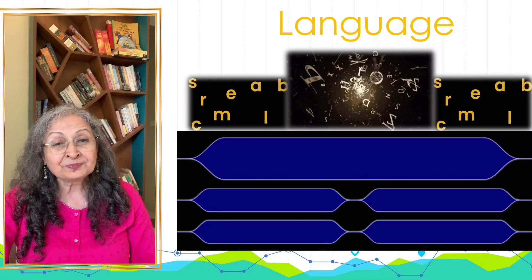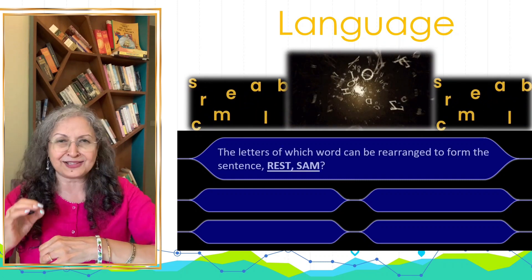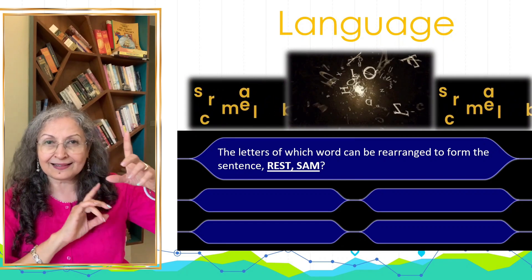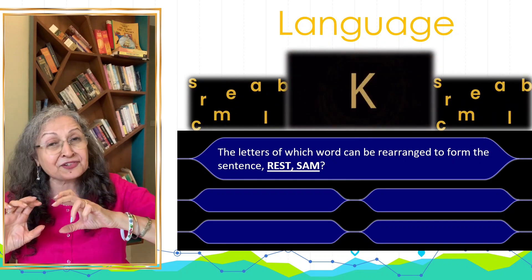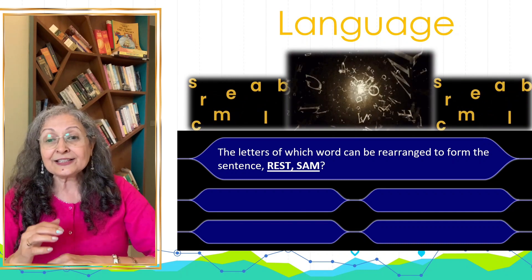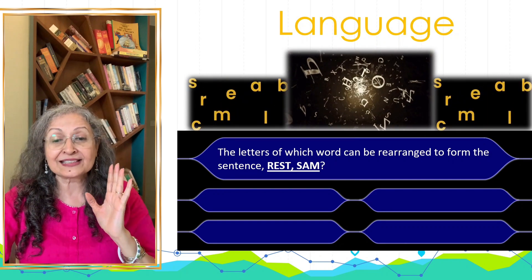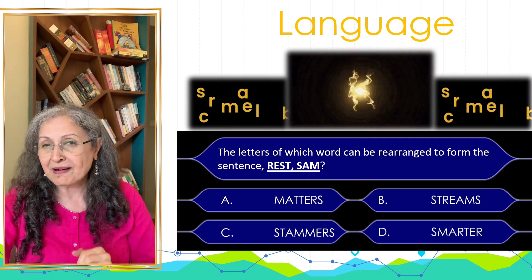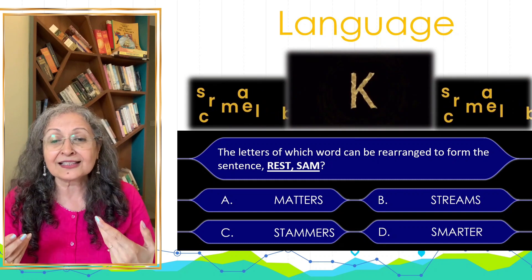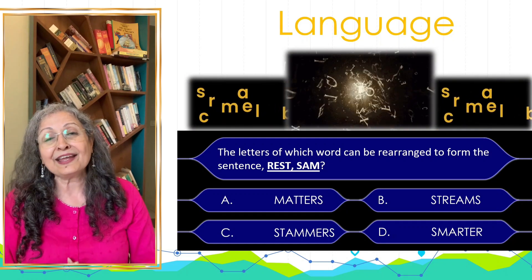What about language? There are clues here as well. Here is a simpler one where grammar and standardization of answer length are key. The question: the letters of which word can be rearranged to form 'rest Sam'? The four options — all the same length — are: matters, streams, stammers, and smarter. No rough work allowed. Thinking fast: 'rest Sam' doesn't have a double T, so not stammers or matters. It doesn't have a double R, so not smarter. Therefore, the answer is streams — allowing faster thinking about vocabulary and how words and letters play out.